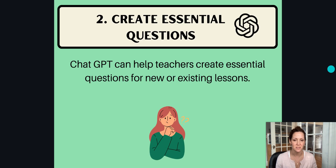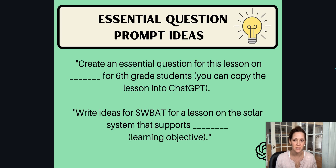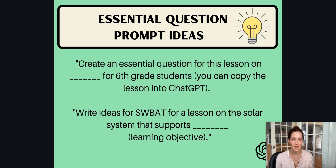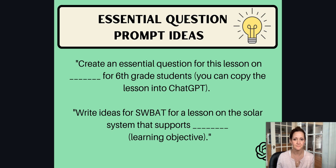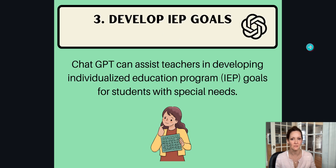Essential questions — here are a couple of prompt ideas: create an essential question for this lesson on [blank] for sixth grade students. You can copy and paste that lesson right into ChatGPT after that prompt for the most effective response. For SWBAT — students will be able to — write ideas for SWBAT for a lesson on the solar system that supports whatever your learning objective is for that particular lesson.